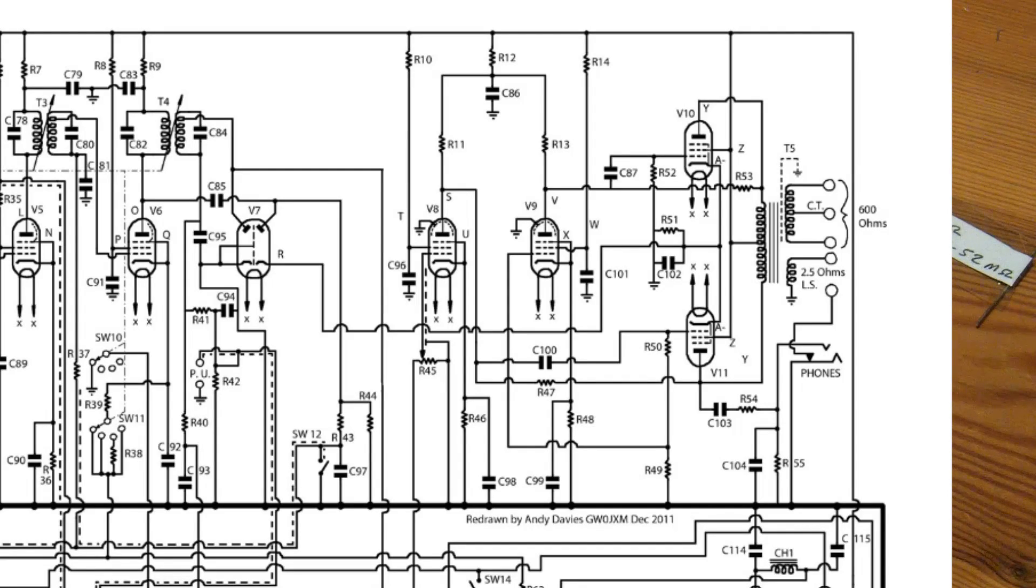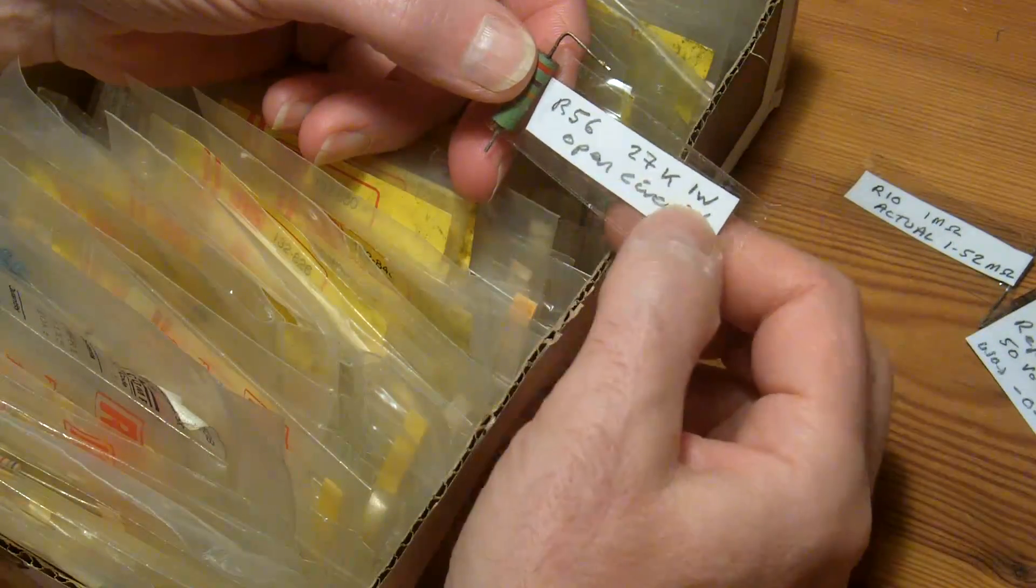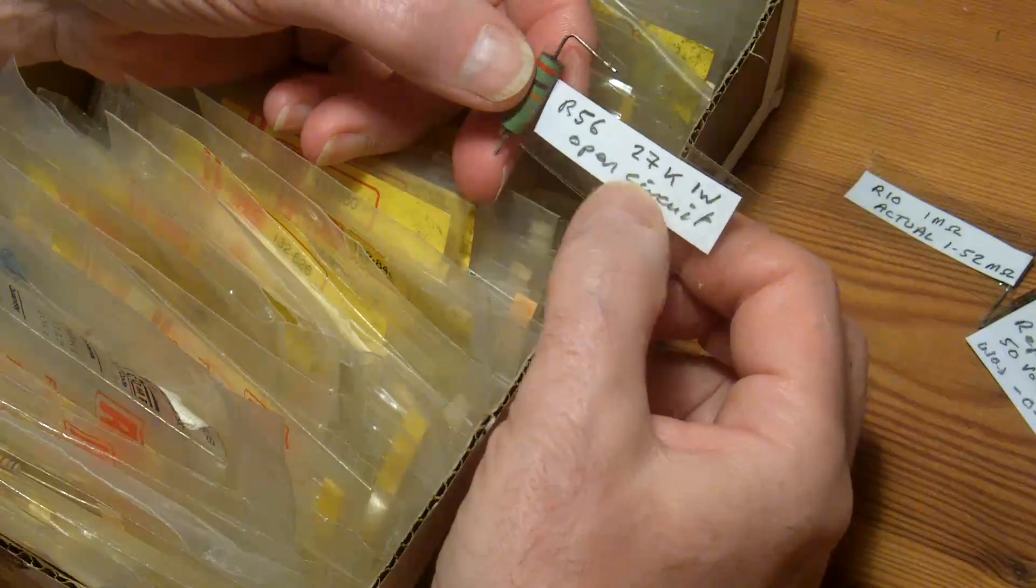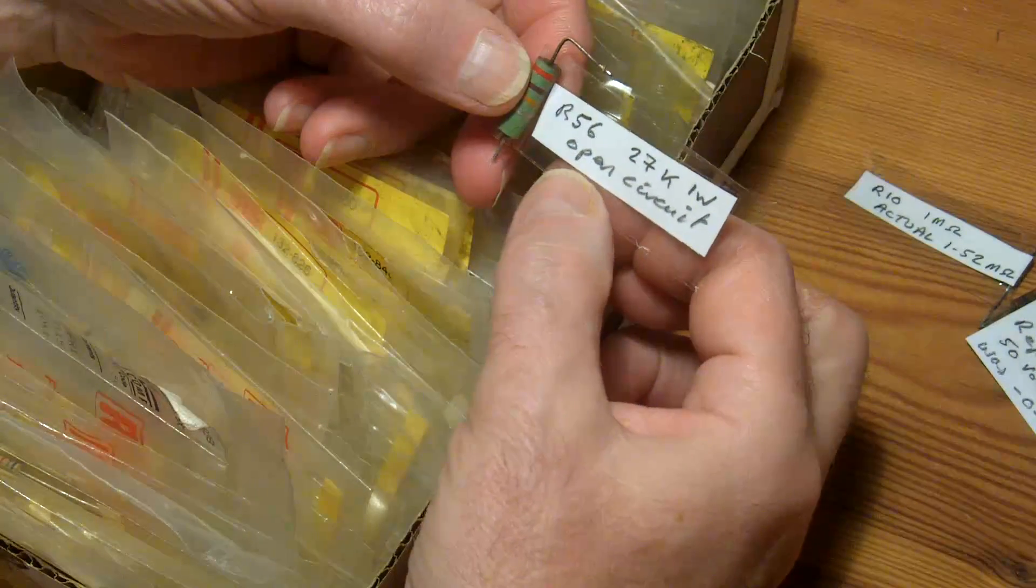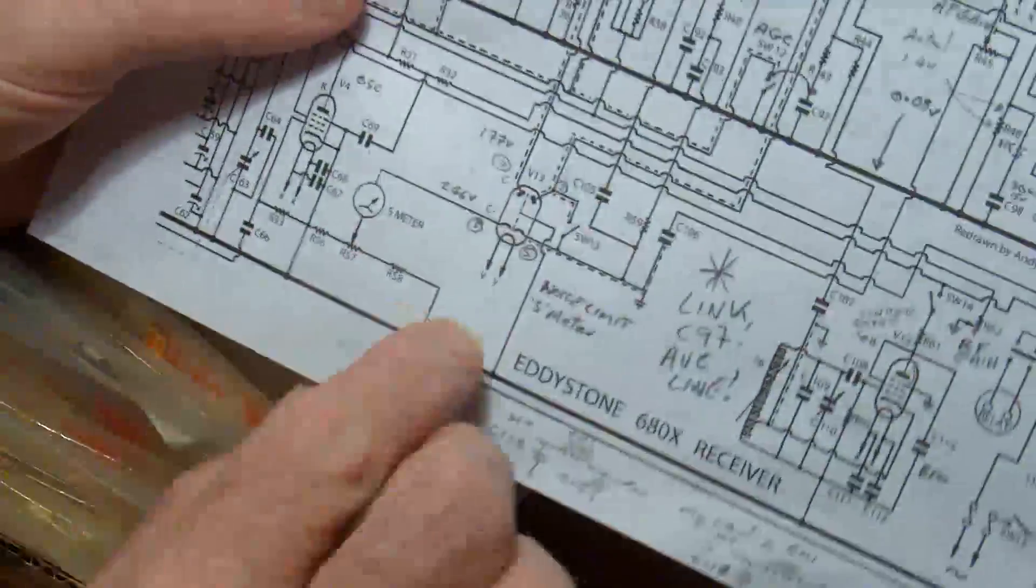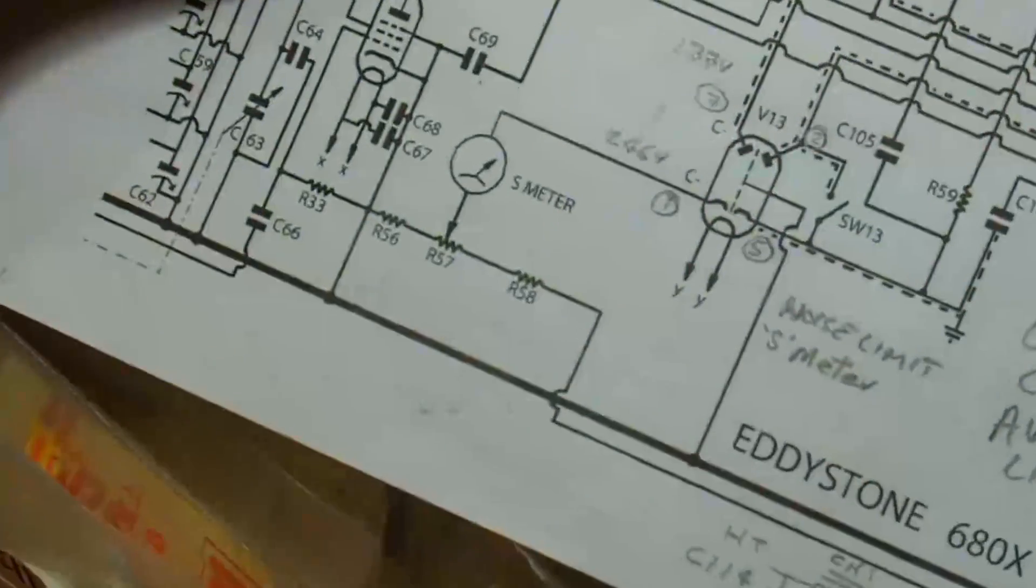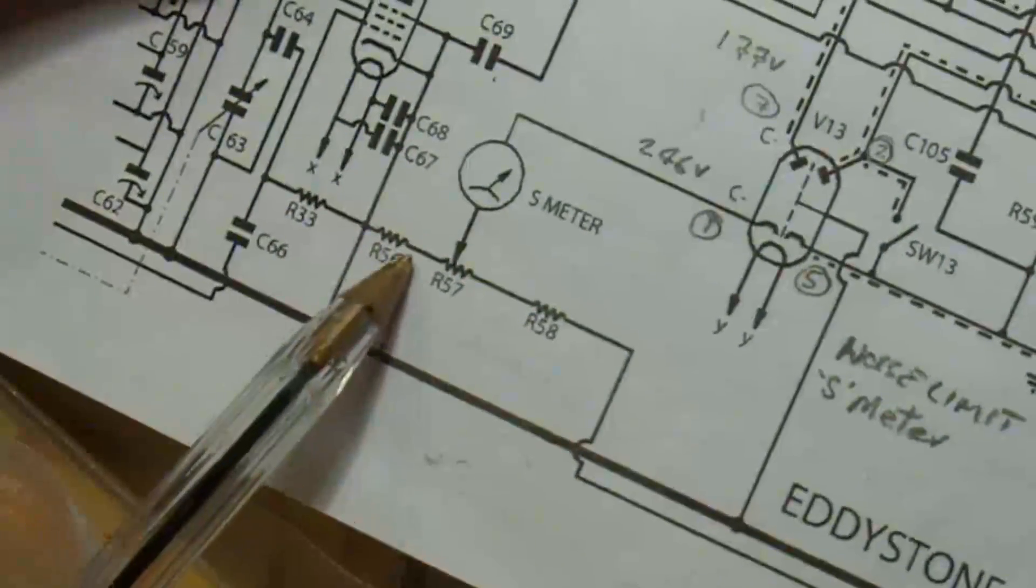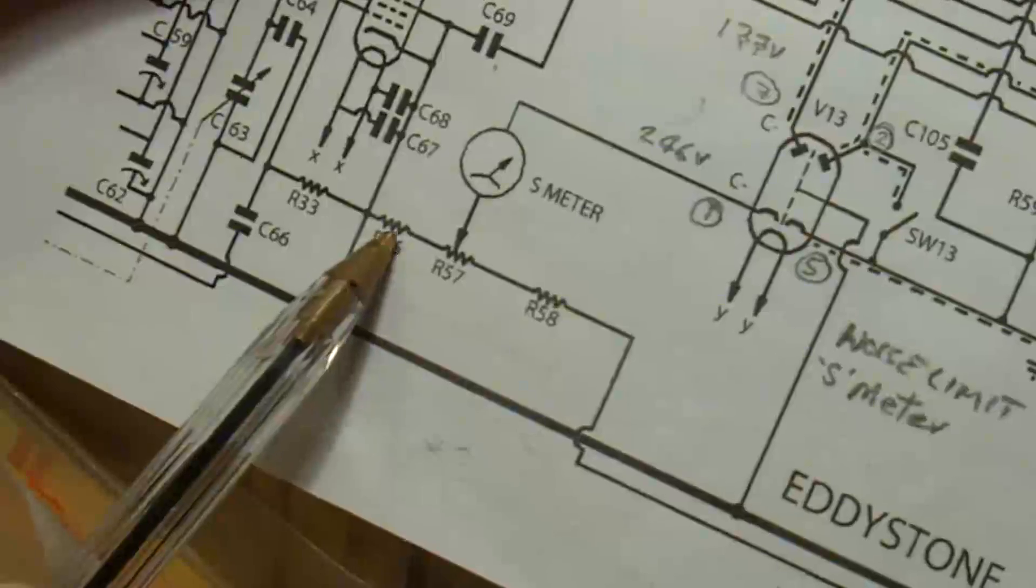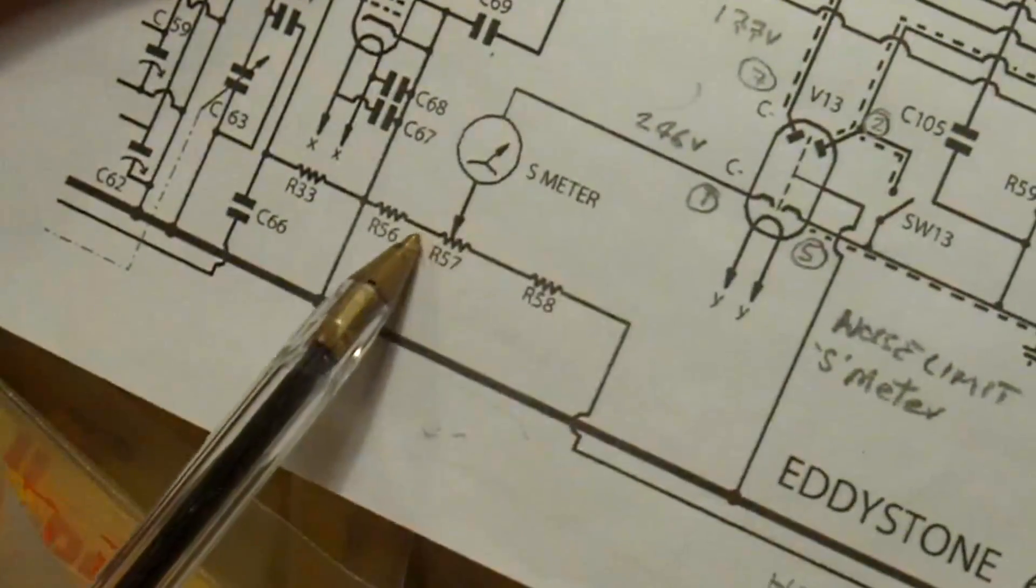This is R56, 27k one watt. This is in the bottom of the meter circuit. Just bring that in there. It's that resistor there, and that was open circuit.